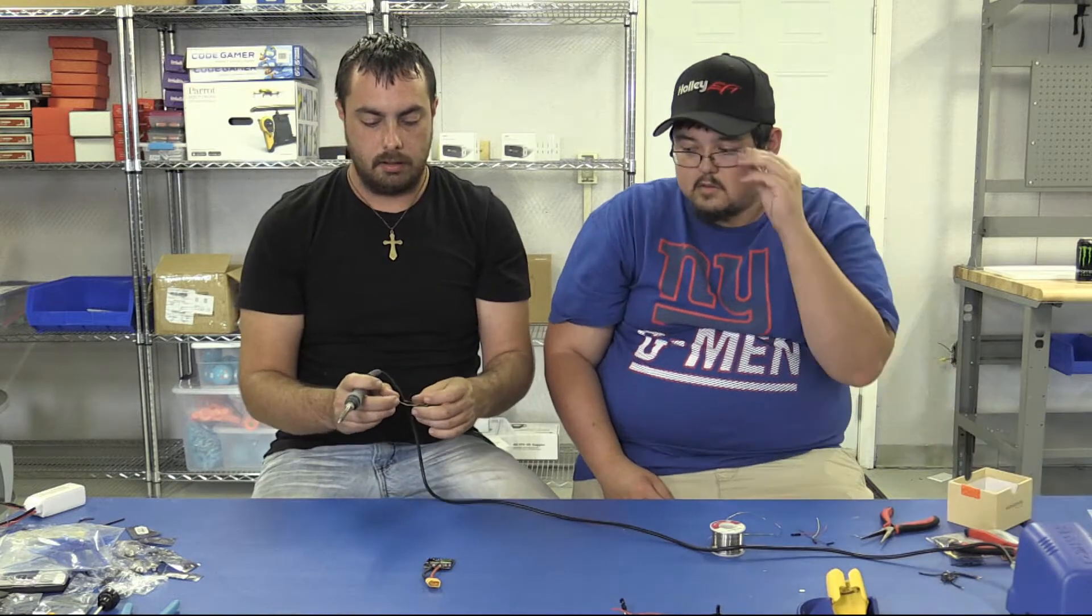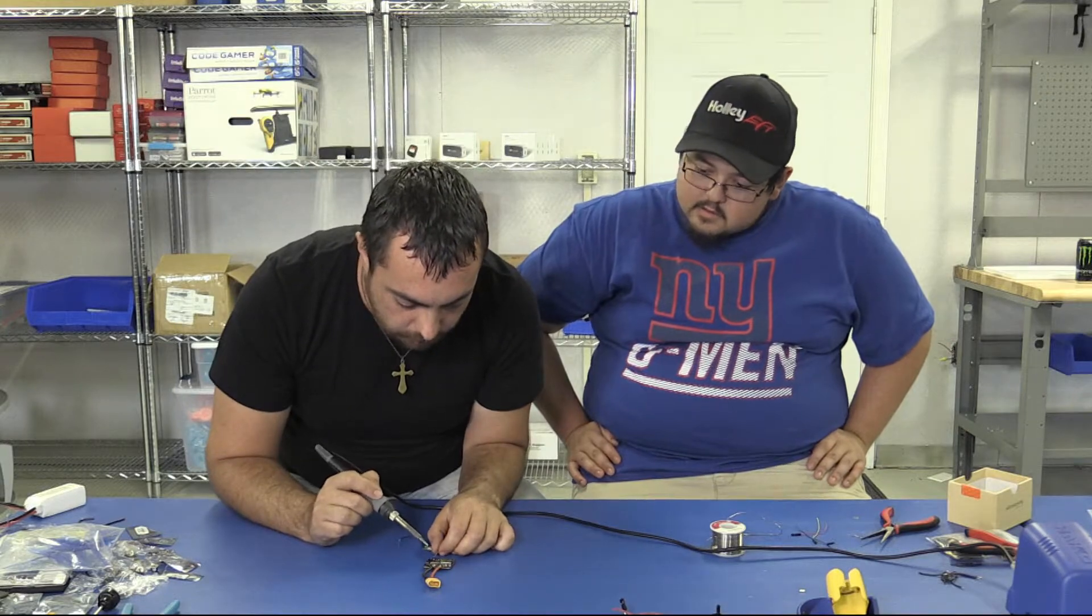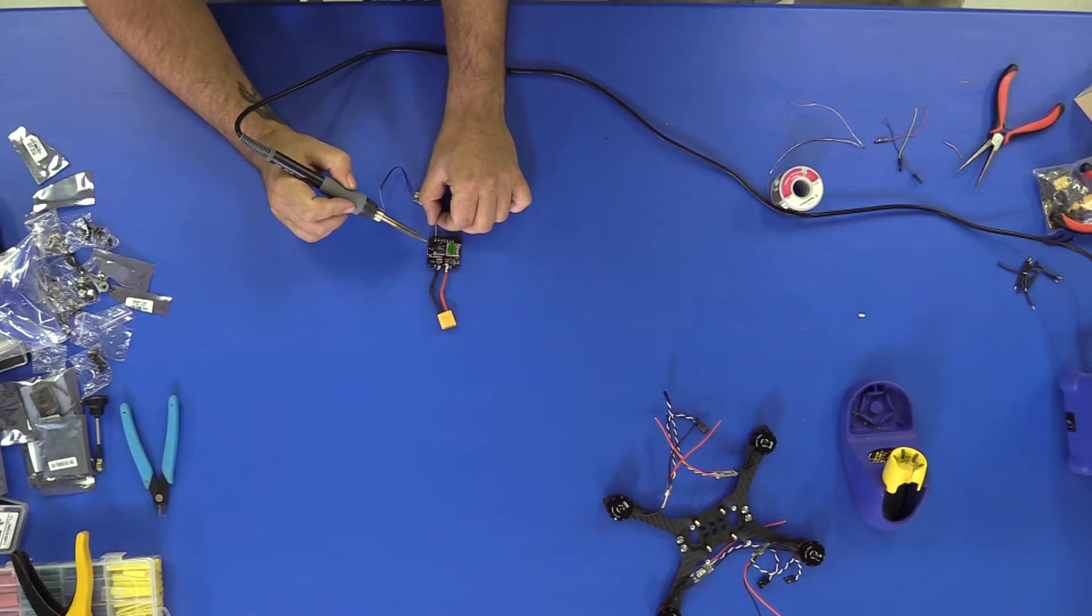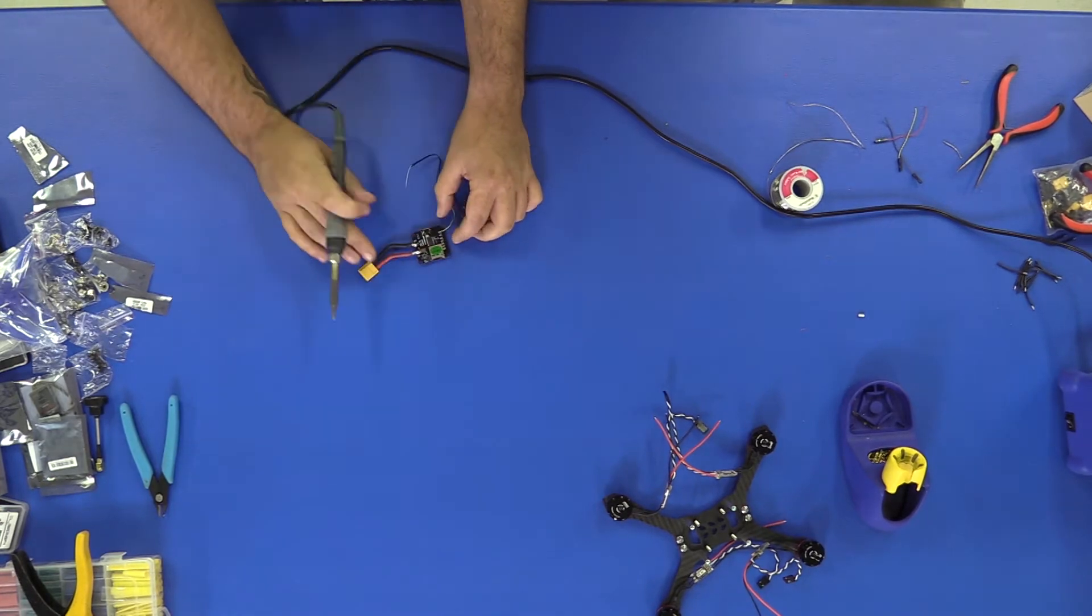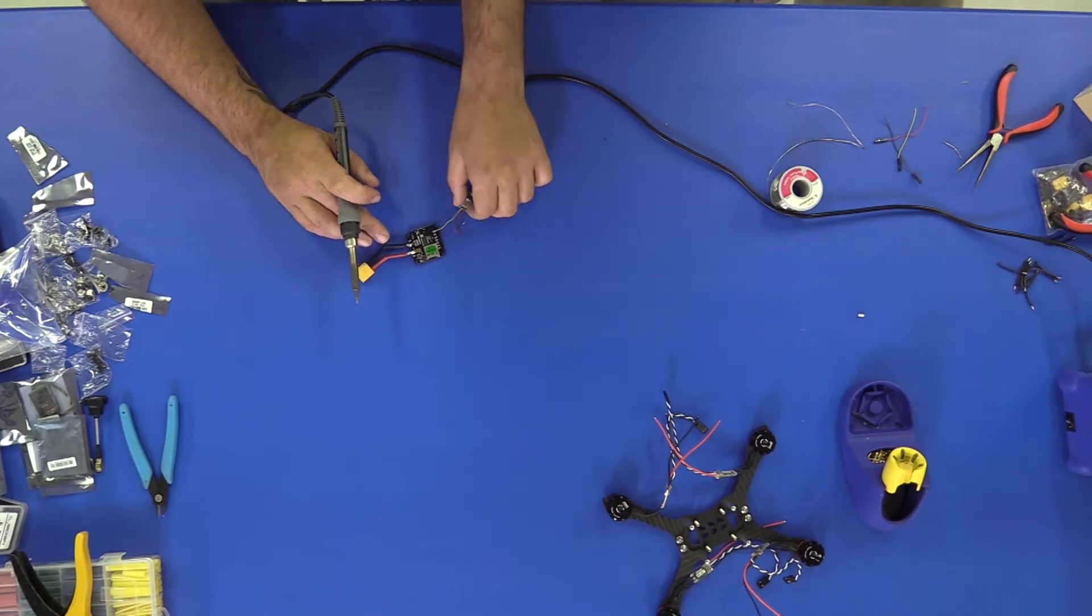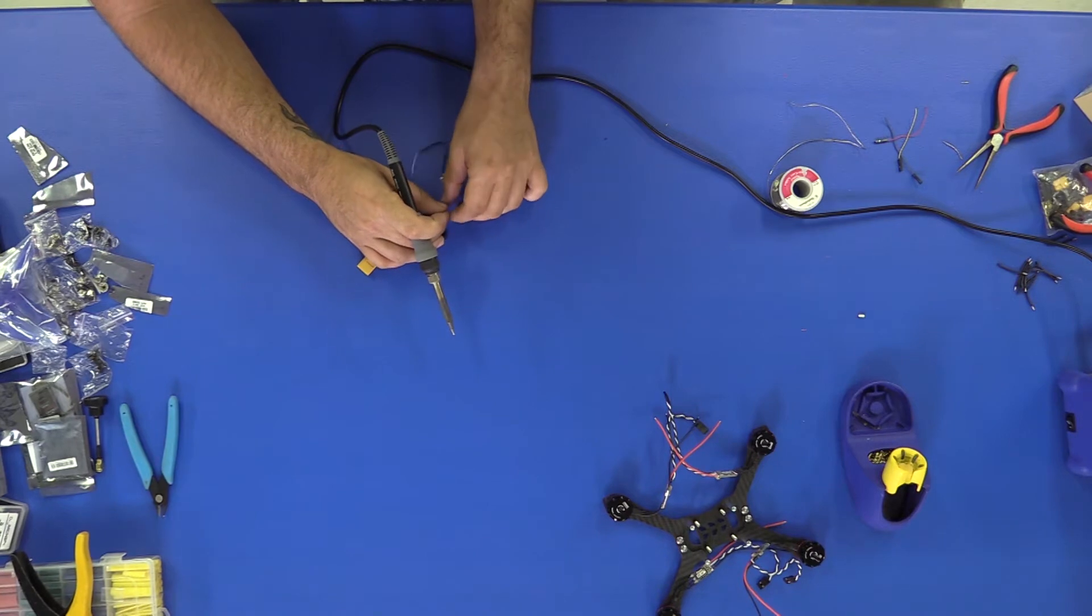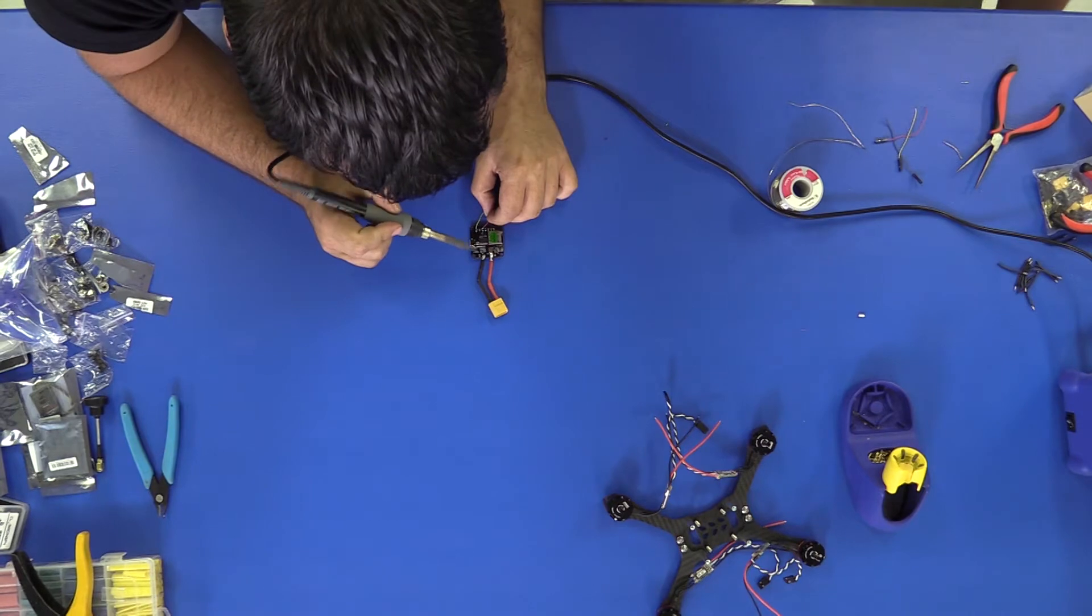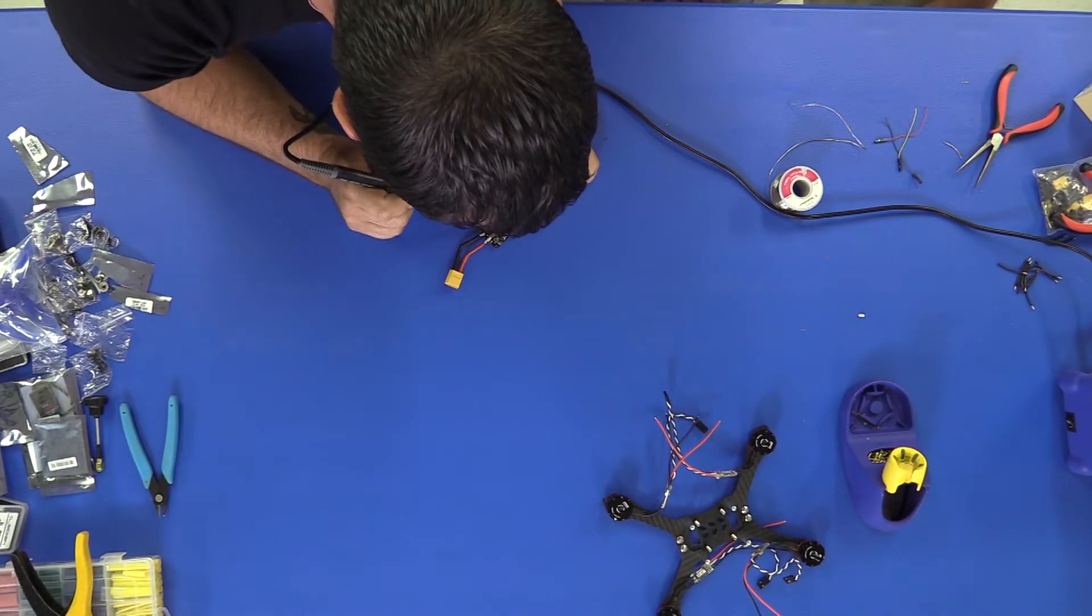All right, next we're going to take our signal wire, the yellow wire in our case, and we're going to attach it to the first pad which says S-bus. The wire is already tinned, so you don't really need to add solder. Give it a slight tug to make sure everything's good. Now our next wire is our power wire, which is 5 volts, and that is on your next pad down. We're going to skip satellite.